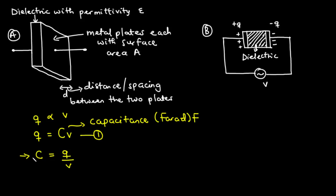Even though C = Q/V, the capacitance does not depend on Q and V but rather on the physical dimensions of the capacitor. So we have a second equation: C = ε × A / D, where ε is the permittivity of the dielectric, A is the surface area of each metallic plate, and D is the physical spacing between the two metallic plates.